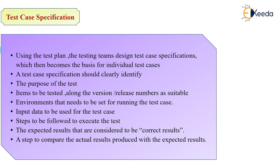The expected results are considered to be the correct results. There is a step to compare the actual and the expected results. Then there is result reporting — why the results have been deferred, or what defects made them different. This is the entire test case specification, which is essentially the complete writing of your test script.